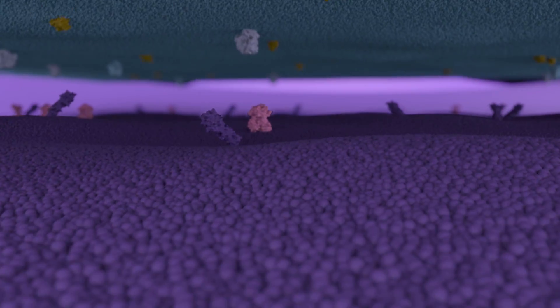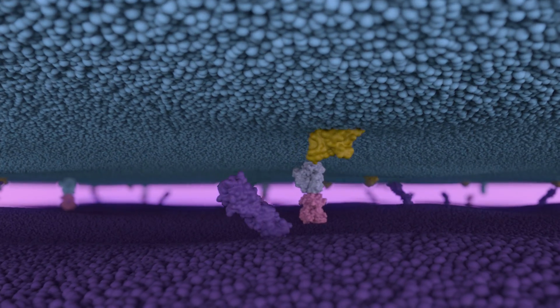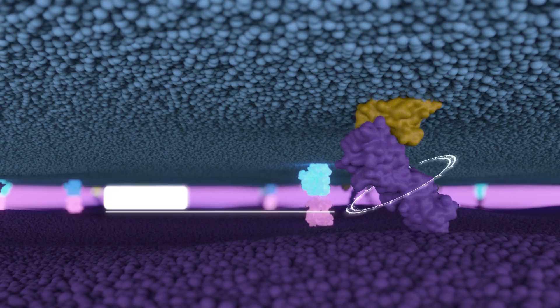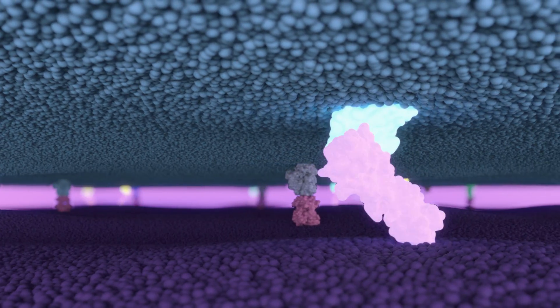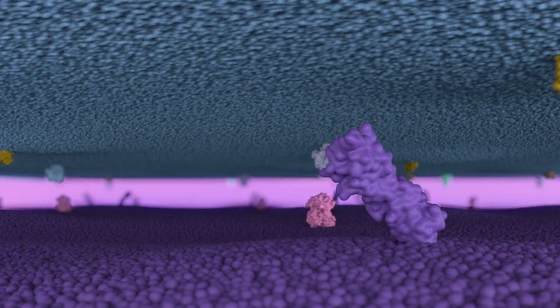One way tumours can do this is to produce molecules that can trick the immune system. One of these is called PD-L1. It interacts with a molecule on the immune cell, telling it to ignore the cancer.